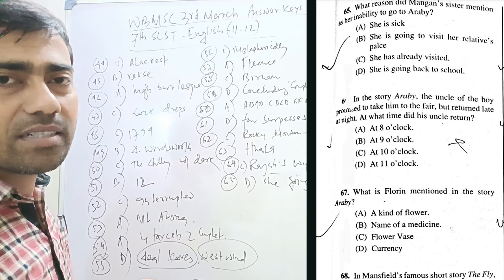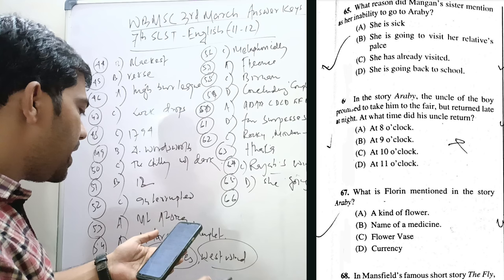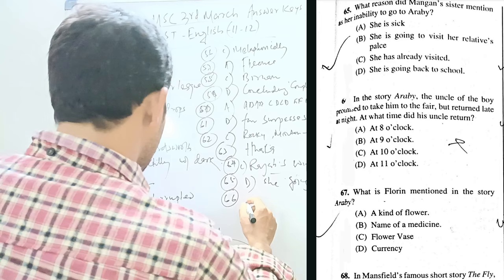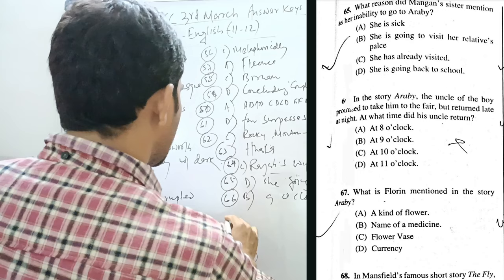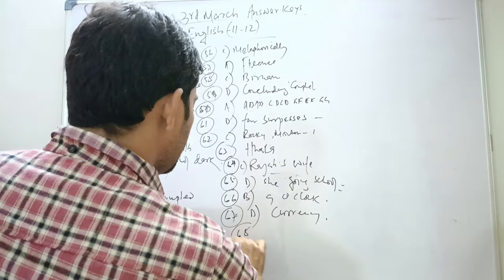Question 66. In the story Araby, the uncle of the boy promised to take him to the fair but returned late at night. At what time did his uncle return? At 9 o'clock. Very straightforward question. Question 67. What is the Florin mentioned in the story Araby? Florin is a currency. Shilling. So, shilling is equivalent to Florin.